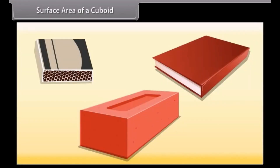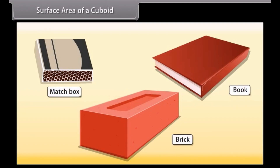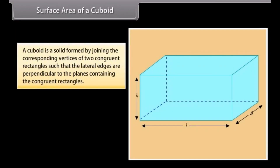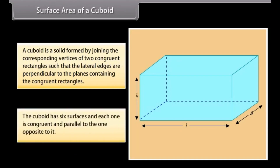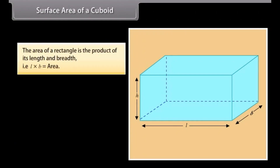Surface area of a cuboid. Students, look at these things: a book, a matchbox, a brick — all these are examples of a cuboid. A cuboid is a solid formed by joining the corresponding vertices of two congruent rectangles such that the lateral edges are perpendicular to the planes containing the congruent rectangles. We can see that the cuboid has six surfaces and each one is congruent and parallel to the one opposite to it.